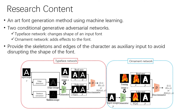Our research focuses on an AdFont generation method using machine learning. We use two CGANs to achieve this task. One named Typeface Network is used to change the shape of an input font, and another one named Ornament Network which is used to add special effects to the font. In order to avoid disrupting the shape of the font, we provide skeletons and edges of the character as auxiliary input into the Typeface Network.